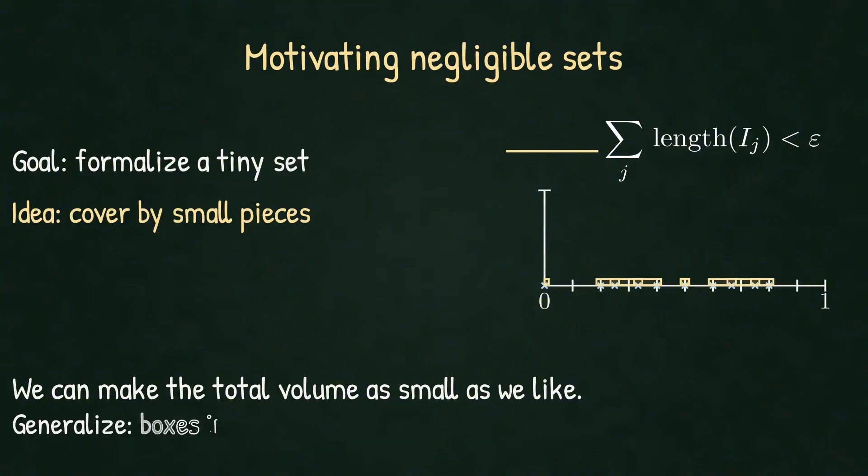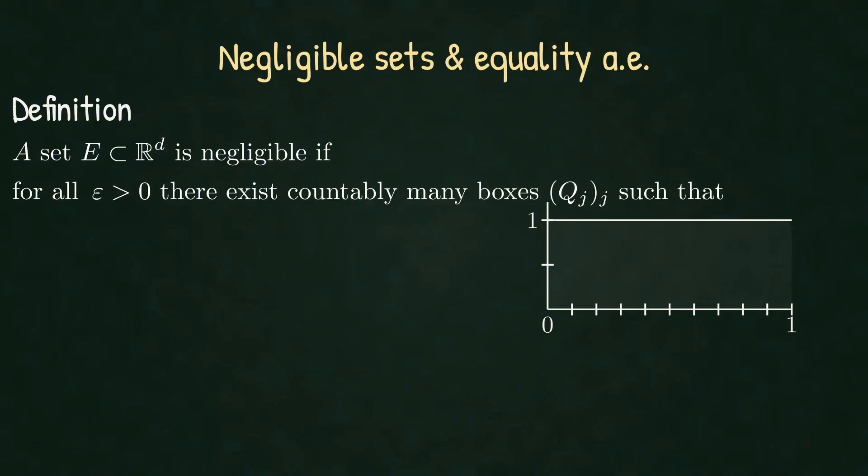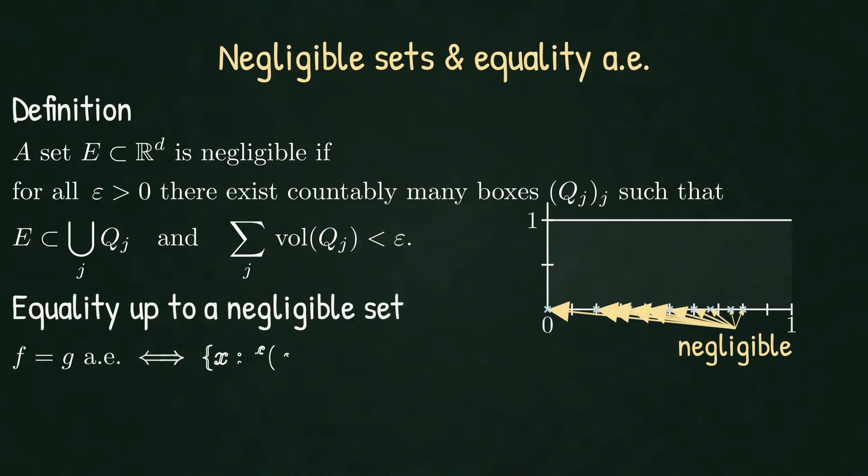The same principle generalizes to d-dimensions using boxes instead of intervals. Here is the formal definition. A set E in d-dimensional real space is negligible if, for all ε > 0, there exist countably many boxes qj such that E is contained in their union and the sum of volumes is less than ε. Two functions are equal almost everywhere (abbreviated AE) if the set where they differ is negligible.